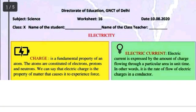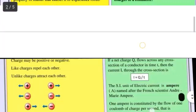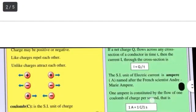Electric current: Electric current is expressed by the amount of charge flowing through a particular area in unit time. Electric current is charge. Positive, positive, positive, negative.